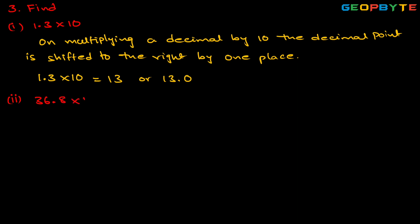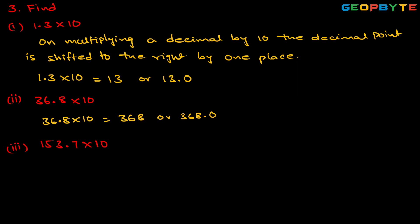36.8 into 10: we are multiplying with 10, so the decimal point shifts to the right by one place, giving 368 or 368.0. Next: 153.7 into 10 — shifting the decimal point by one position gives 1537 or 1537.0. Next: 168.07 into 10 — shifting the decimal point by one position gives 1680.7.